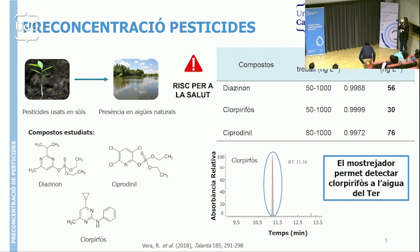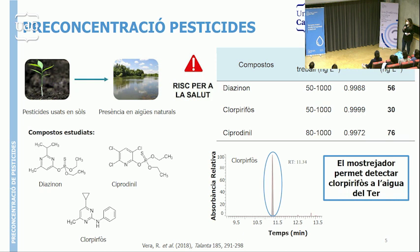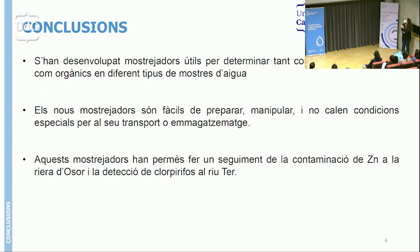Un altre cas on hem utilitzat aquests dispositius amb membranes funcionalitzades és per la preconcentració de pesticides. Els pesticides que usem en els sòls els trobem també en aigües naturals. Hem estudiat tres pesticides diferents i el que ens va permetre detectar aquest tipus de mostrejadors amb les membranes funcionalitzades és que, duent a terme una preconcentració, vam poder detectar que hi havia clorpirifòs al riu Ter. En general, s'han desenvolupat mostrejadors útils per determinar tant contaminants orgànics com inorgànics en diferents tipus de mostres d'aigua, que són fàcils de preparar, barats, fàcils de manipular i no necessiten condicions específiques de treball.